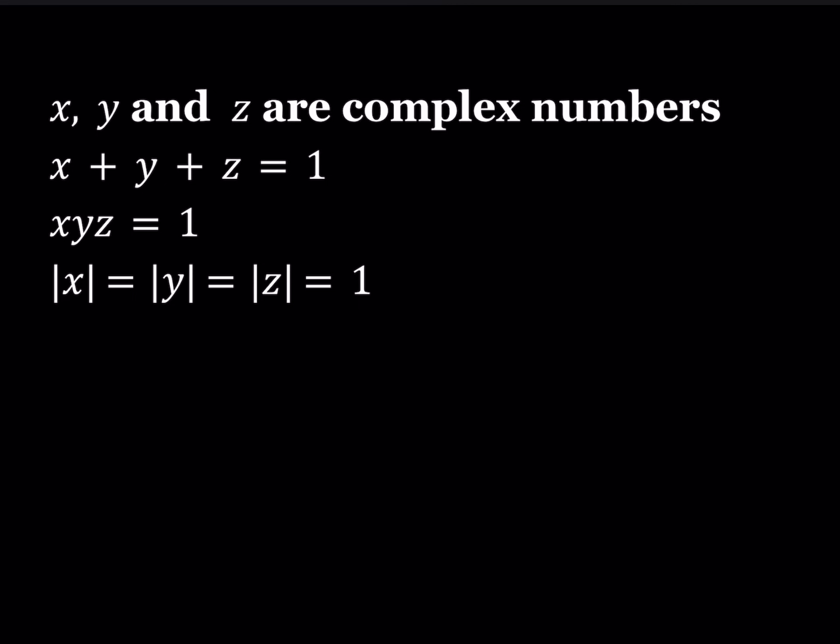X, Y, and Z are complex numbers. X plus Y plus Z is equal to 1. XYZ is equal to 1. And we also know that the absolute value of each of these numbers is equal to 1. And we're going to be finding the X, Y, Z values.